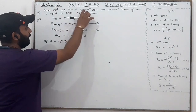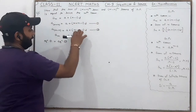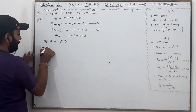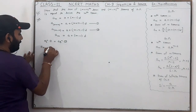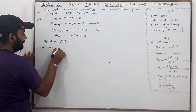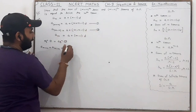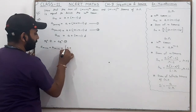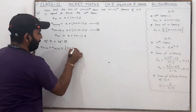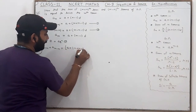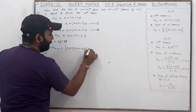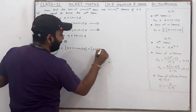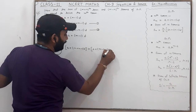So we sum them: a_{m+n} + a_{m-n} = [a + (m+n-1)d] + [a + (m-n-1)d]. The right-hand side gives us these two expressions added together.